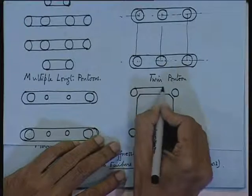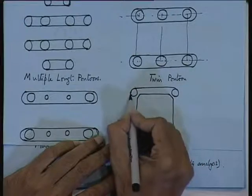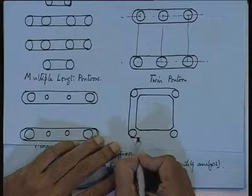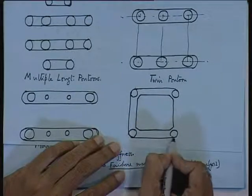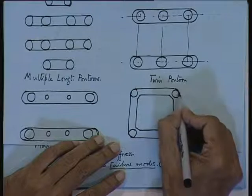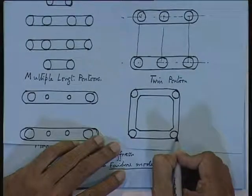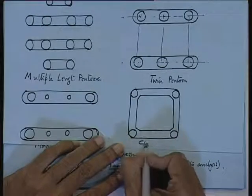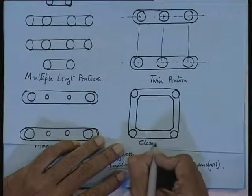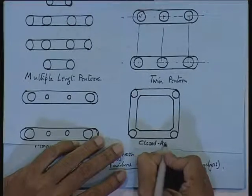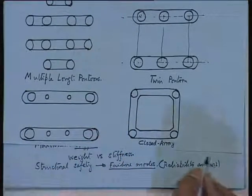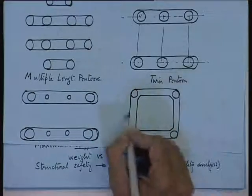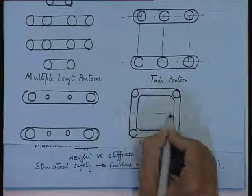The other type is called the closed ring pontoon. In this case the bracing members have been more or less done away with, but it is a ring type pontoon. This type of structure is not very amenable for transportation but is good for drilling at one location. Here the pontoons are not protruding beyond the columns — this is called a closed ring array.